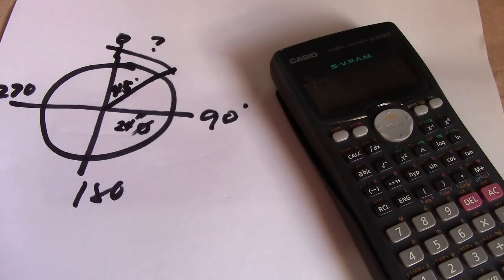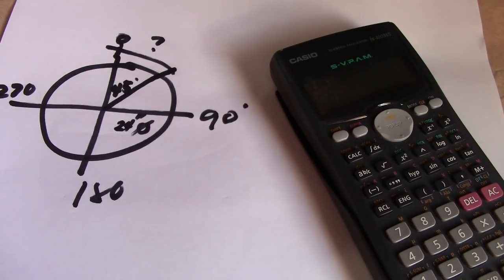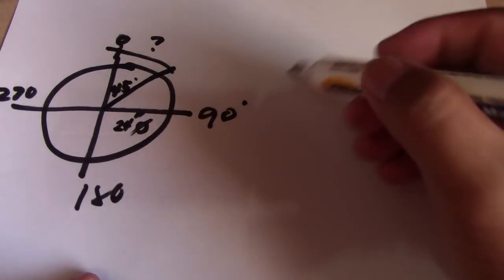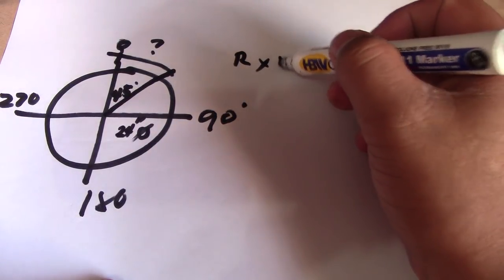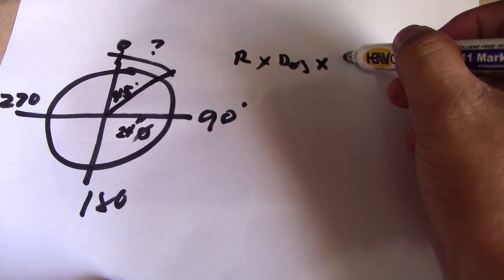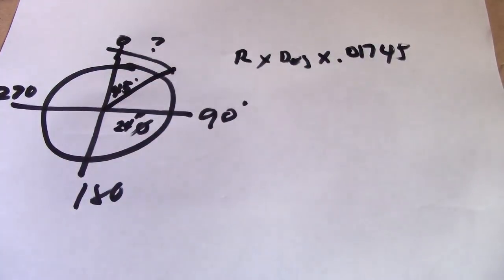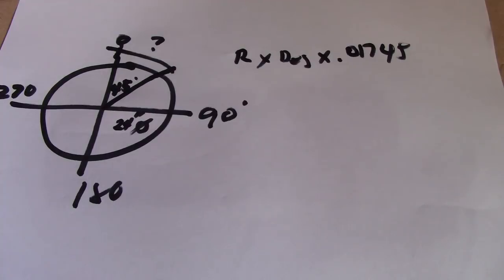We have a formula: radius multiplied by degrees multiplied by 0.01745. This is our first formula. Take note — radius × degrees × 0.01745.